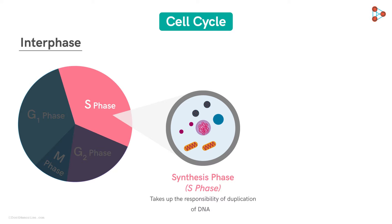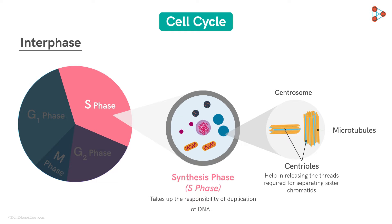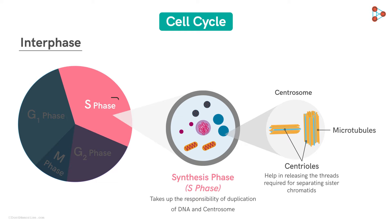Along with the nucleus, there is one more important organelle that gets duplicated in the S-Phase — the Centrosome. This bundle contains smaller organelles called centrioles placed within, usually at right angles. They are made up of microtubules which help in releasing the threads required for separating sister chromatids later. So the S-Phase takes up the responsibility of duplicating the contents inside the nucleus and the centrosome present in the cytoplasm simultaneously.